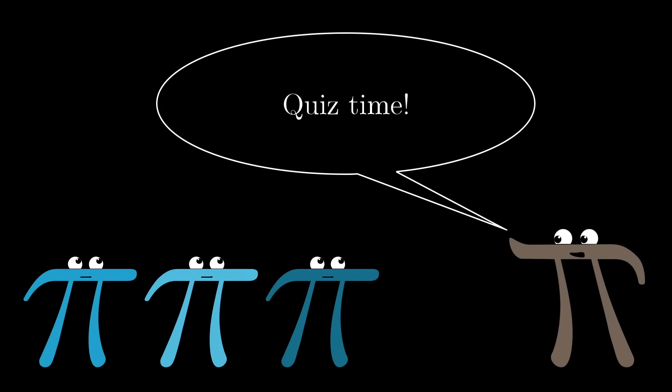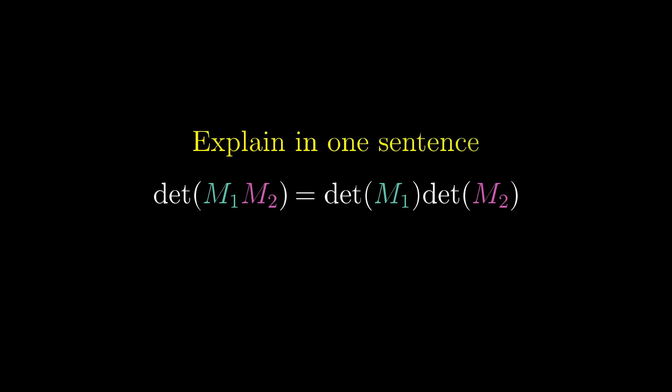Here's kind of a fun question to think about before the next video. If you multiply two matrices together, the determinant of the resulting matrix is the same as the product of the determinants of the original two matrices. If you tried to justify this with numbers, it would take a really long time, but see if you can explain why this makes sense in just one sentence.